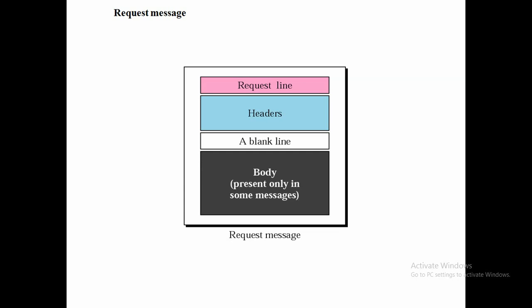The request message consists of a request line, a header, and sometimes a body — present only for some messages. A response message consists of a status line, a header, and sometimes a body. The first line in the request message is called the request line, and the first line in the response message is called the status line.